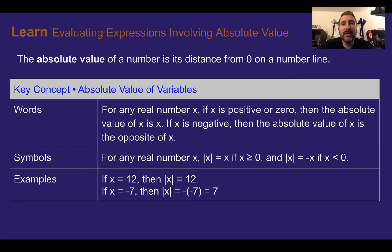That might be pretty confusing, so let's look at some numerical examples. If x is 12, then the absolute value of x or the absolute value of 12 is just 12. If x is equal to negative 7, then the absolute value of x is the opposite of that number, which makes it positive 7.